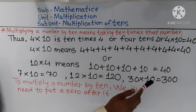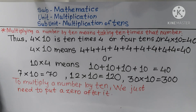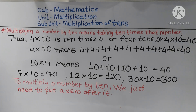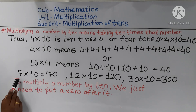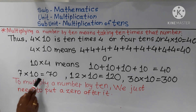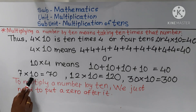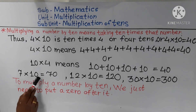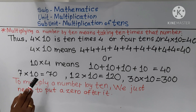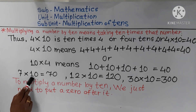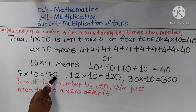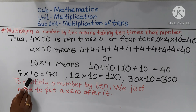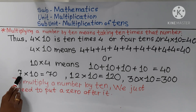In this given example, we have taken 7 ten times. If we say the 10 times table up to 7, we get the answer 70.